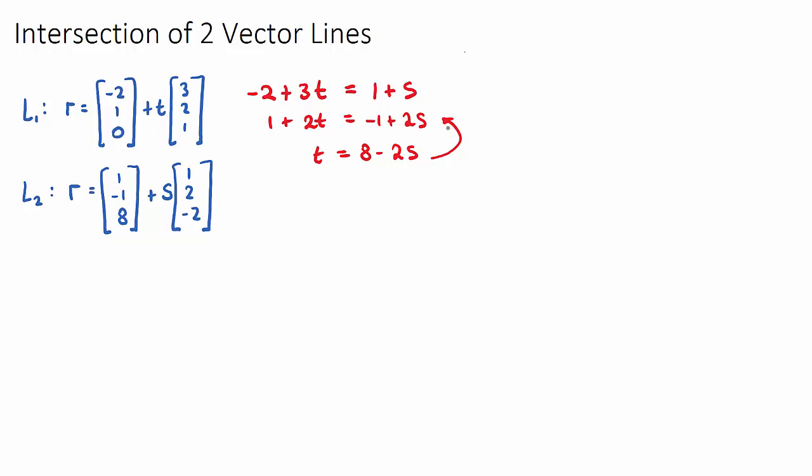So if I do that, I'm going to have 1 plus 2 times, and I'm not going to write t. I'm going to replace t with 8 minus 2s. The reason why I've done that is because once I put the right-hand side of this equation, I'll realize I now have an equation that only has one variable, and I can solve for s.